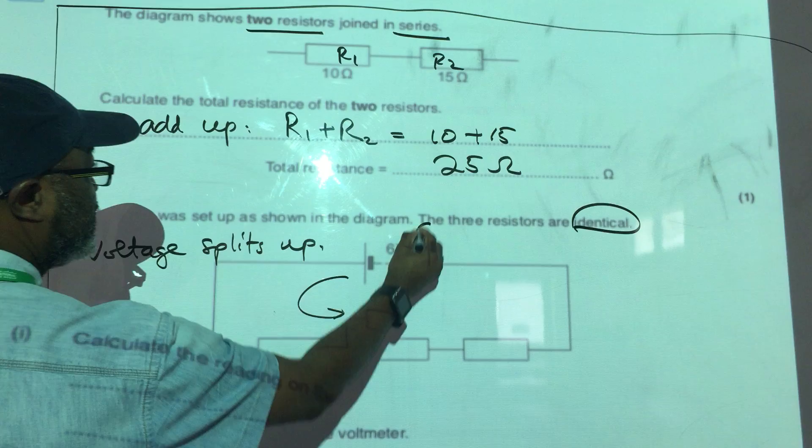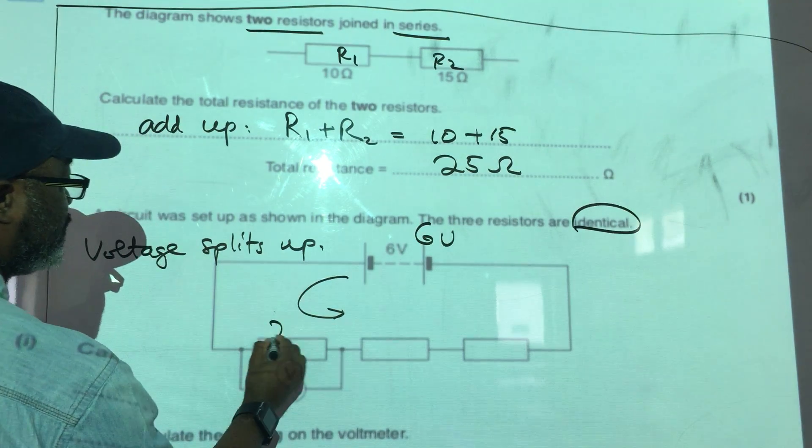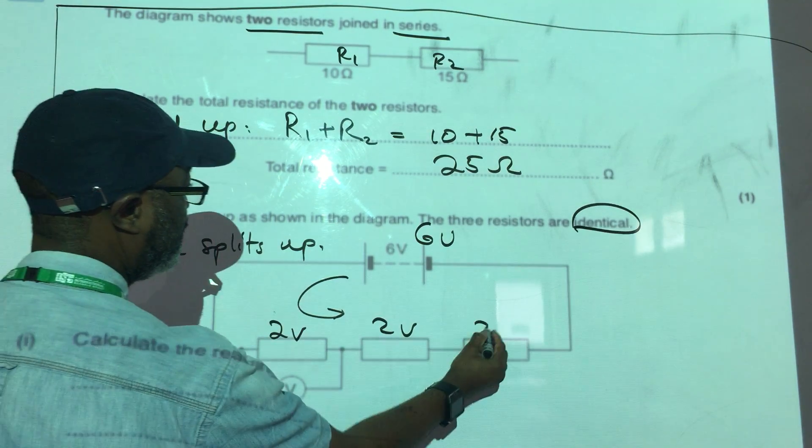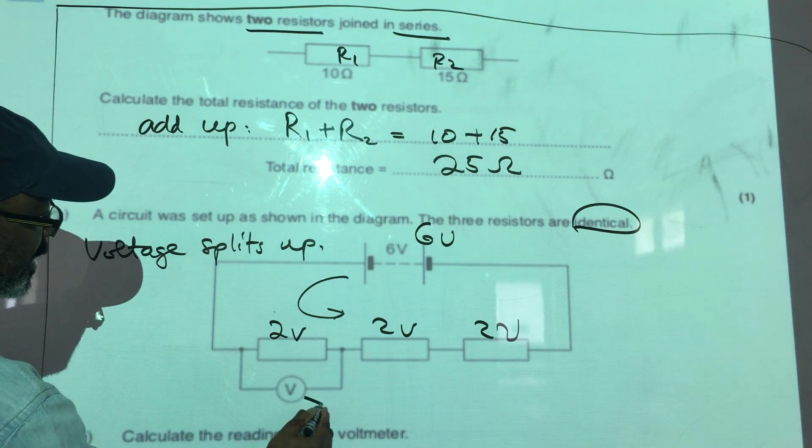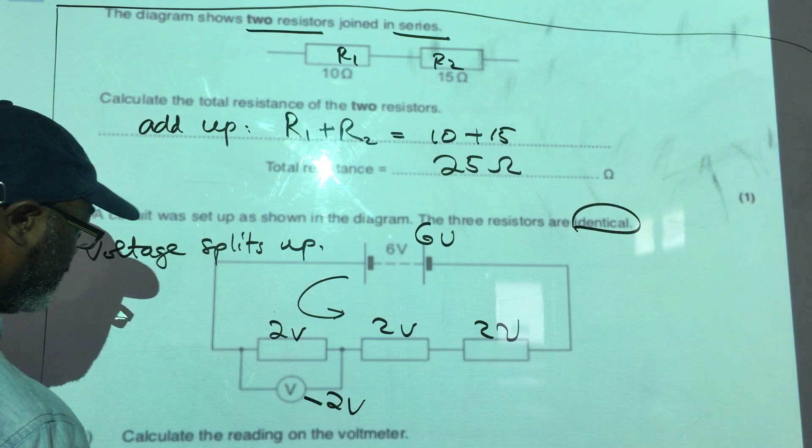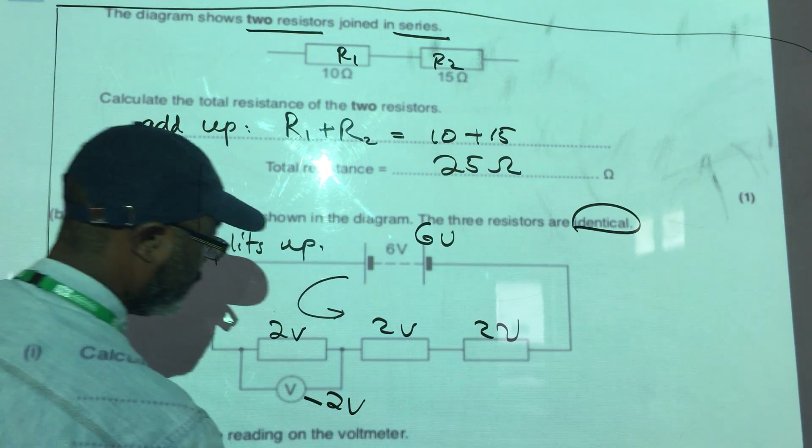So if this is 6 volts, this has to be 2 volts, 2 volts, 2 volts in a series circuit. And if you put a voltmeter here, the reading on that voltmeter is going to be 2 volts.